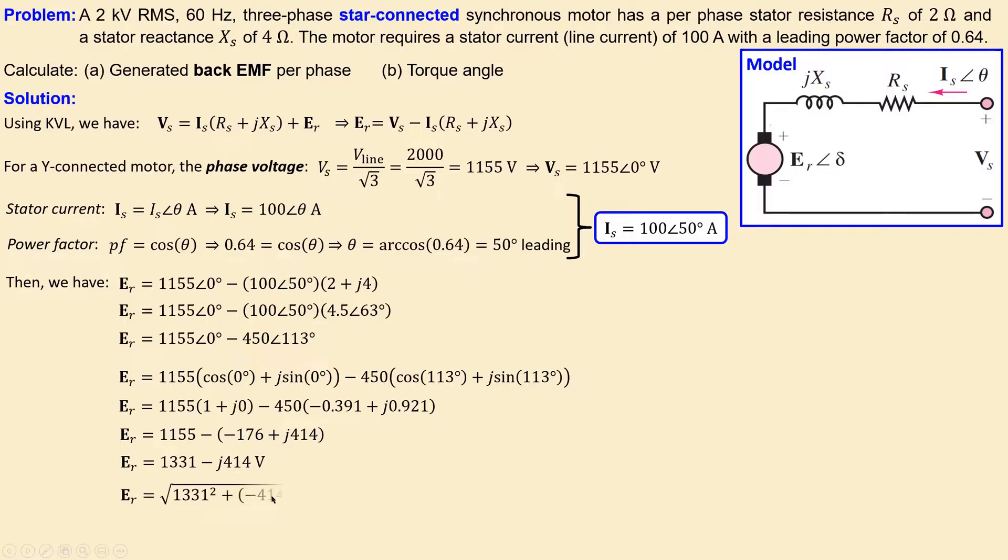Converting this to polar form using the formula—square root of the real part squared plus the imaginary part squared—and for the phase, use the imaginary part divided by the real part.